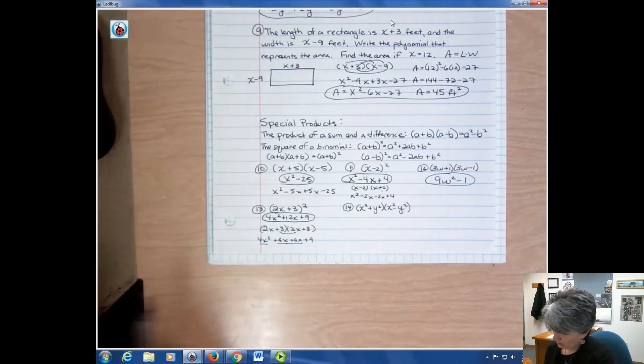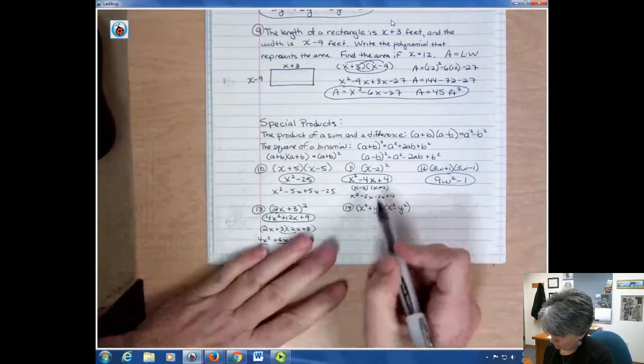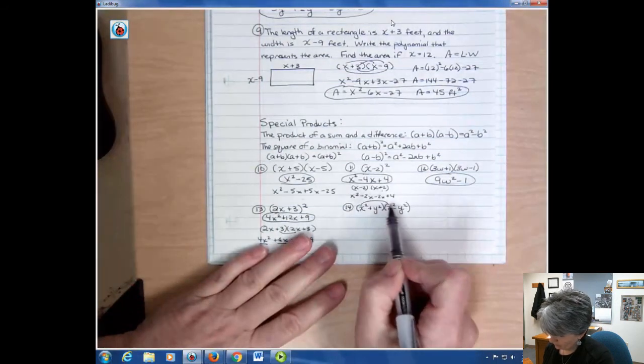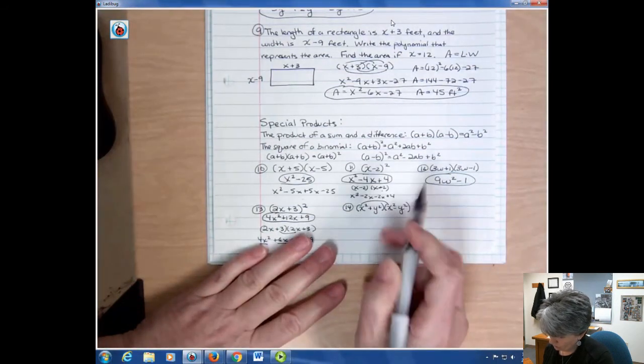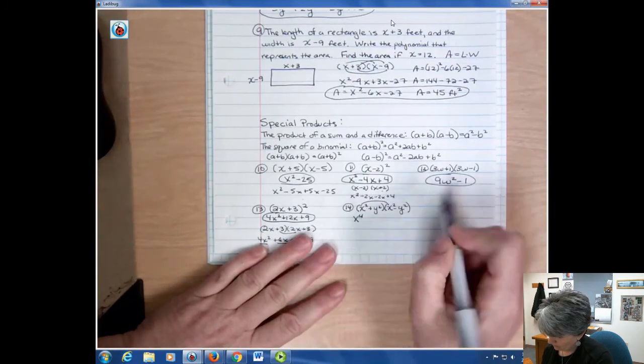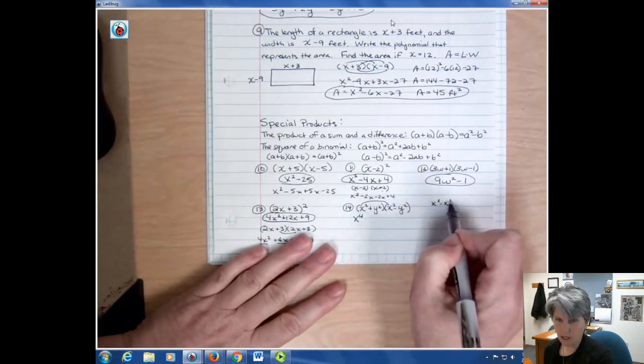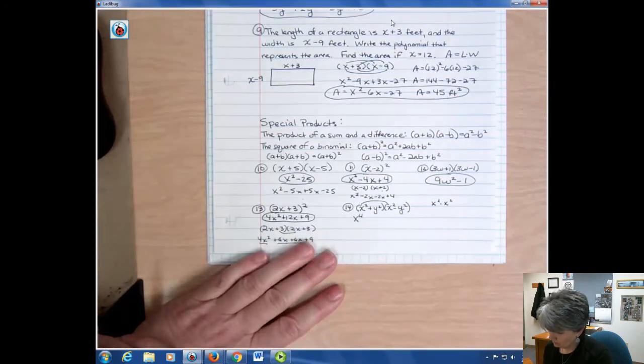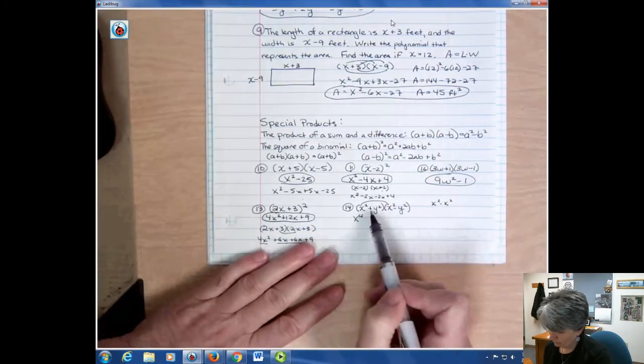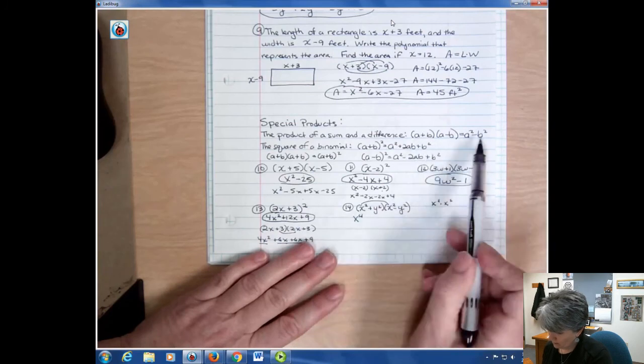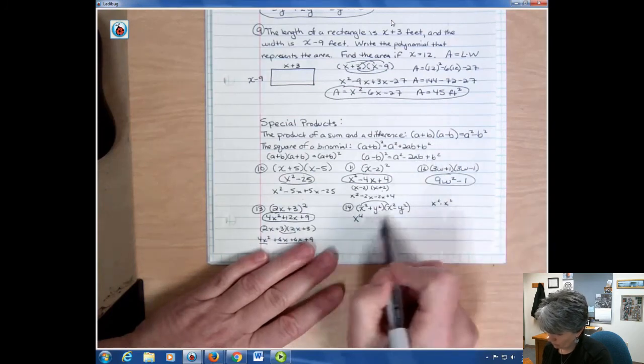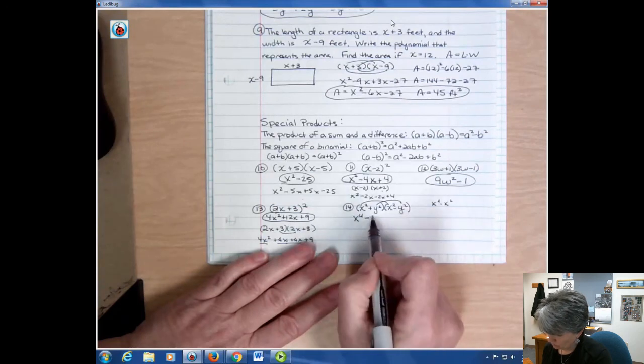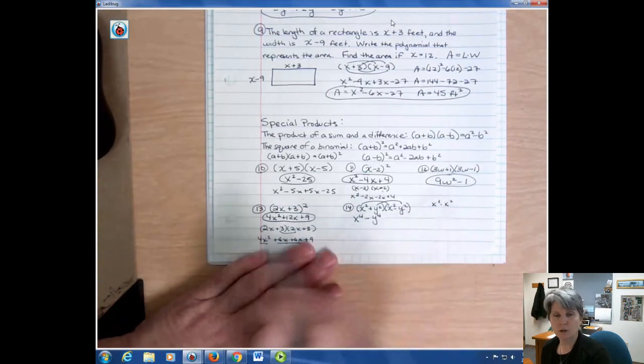FOIL it out if you're not certain. I wanted to do this one because it's got more powers in it. So if I did the first term, x squared times x squared, I would get x to the fourth power. Because I'd have to add those powers together, right? 2 plus 2 is going to give me 4. Because these are exactly the same, one's a sum and one's a difference, I can use the shortcut. And so the only other term I have to worry about is y squared times y squared, which is minus y to the fourth. And so that's it. I'm done with that problem.